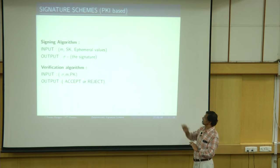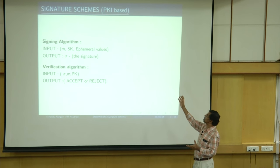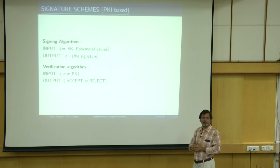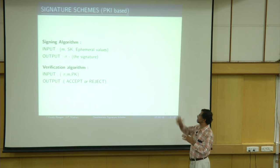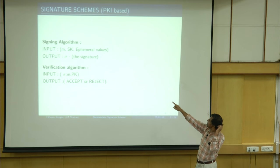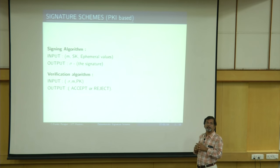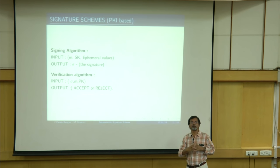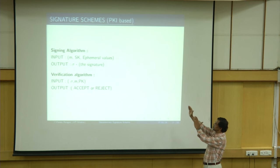In the signing algorithm, the input is the message M, the secret key, and some ephemeral values — temporary random values which are used during the signing process — and then finally the signed document or digital signature is produced. We denote that by sigma. It can be produced only by the owner of the secret key, and that is the purpose of a signature. Basically, it binds the message with the signer. If anybody else could do it, it is called forgery.